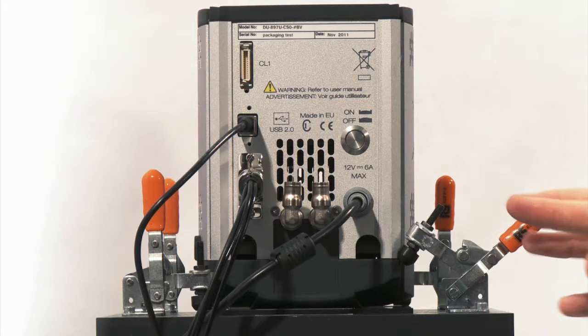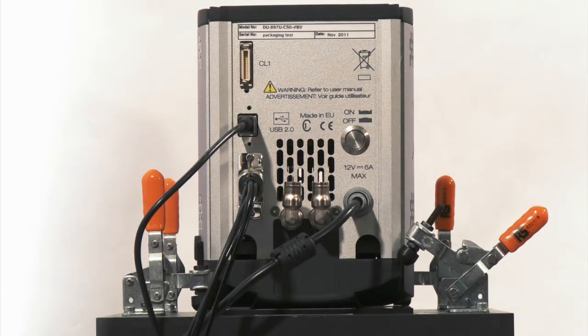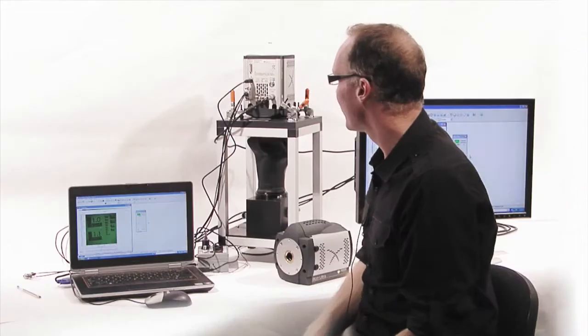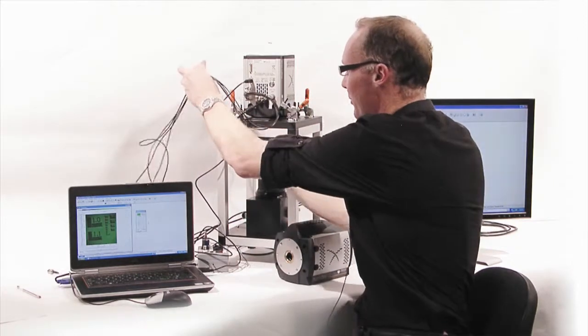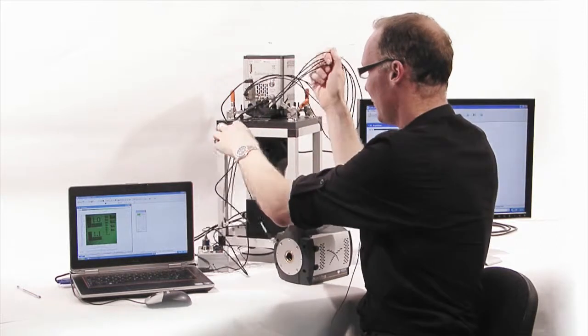Now, we also have plugged in an I.O. connector. It's a 26-pin D-type and from this you can have a number of inputs and outputs. We're showing a few of them here.